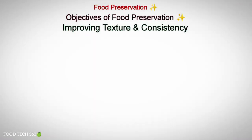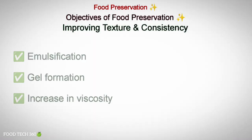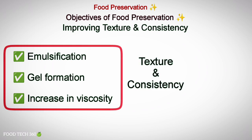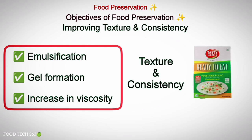Another objective is improving texture and consistency. Processes such as emulsification, gel formation and increase in viscosity are aimed to improve the texture and consistency of ready-to-eat foods.